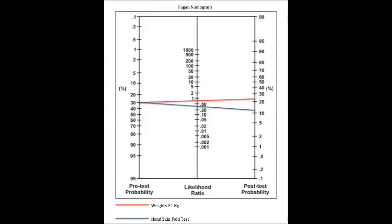Now let's say this same individual with a 30% prevalence rate of having osteoporosis goes to their physician and completes the weight test first, but the results come back negative. The negative likelihood ratio for the weight test is 0.8. After charting these values on the Fagan nomogram, the post-test probability—which tells us the proportion of patients testing positive who truly have this condition—is about 23%, represented by the red line. This 7% decline from 30% to 23% isn't really enough to rule out the diagnosis, so the physician would want to try another test such as the hand-skin fold test, represented by the blue line.